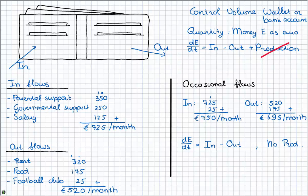So the inflow is then our occasional flow this month, 750 euros. The outflow of course is 695 euros this month. Now I can fill in those numbers and I will get de/dt is 750 euros per month minus 695 euros per month makes 55 euros this month. So I hope this makes something clear for you.